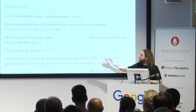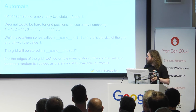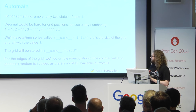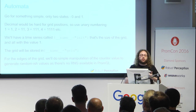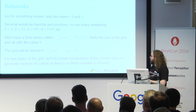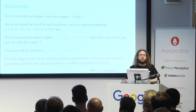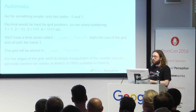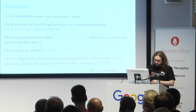For the edges of the grid, we can do some manipulation of the counter to produce randomish values, as there's no real random number generator available in PromQL. Apparently people want things to be deterministic — it doesn't help at all with Monte Carlo simulations.